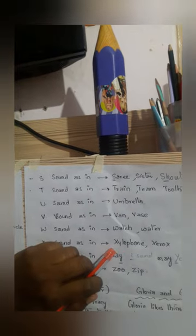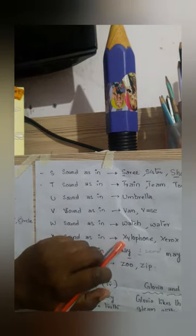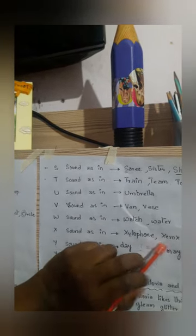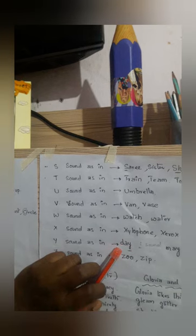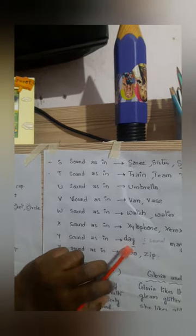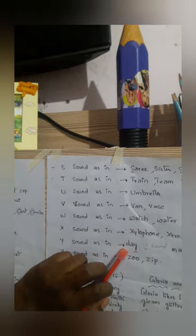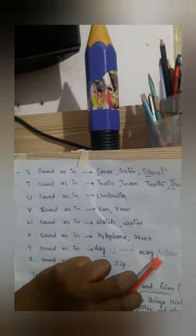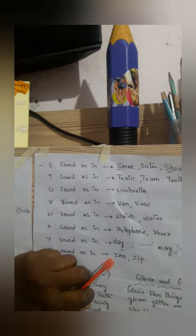Coming to X, it gives the sound of 'z'. So the sound X should be — xylophone. It should be pronounced as 'z' — xylophone, xerox. Coming to Y, it gives the sound of 'i'. In the word D, A, Y — Y is giving us the sound of 'i'. So it sounds as day, may — M, A, Y — may. Yellow — Y, E, L, L, O, W — it gives us the sound of 'i'.